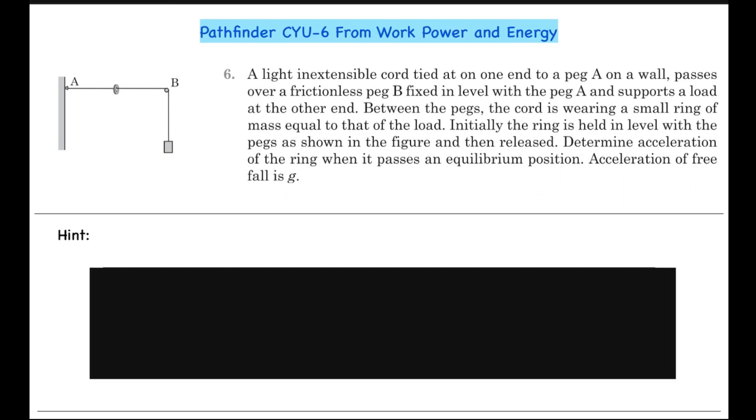the wall passes over frictionless peg B fixed in level with peg A and supports a load at the other end. Between the pegs, the cord is wearing a small ring of mass equal to that of the load. Initially, the